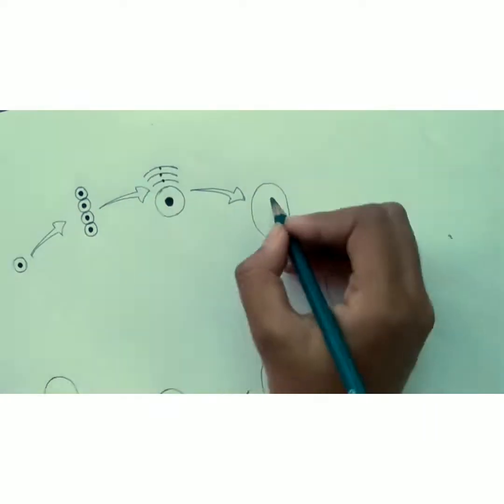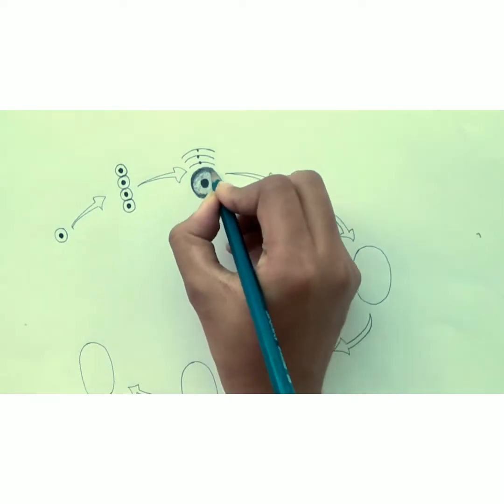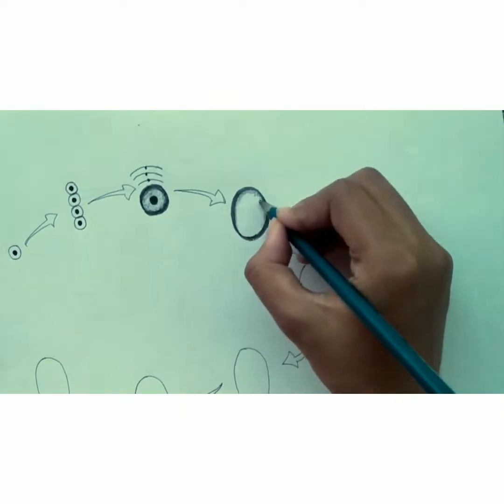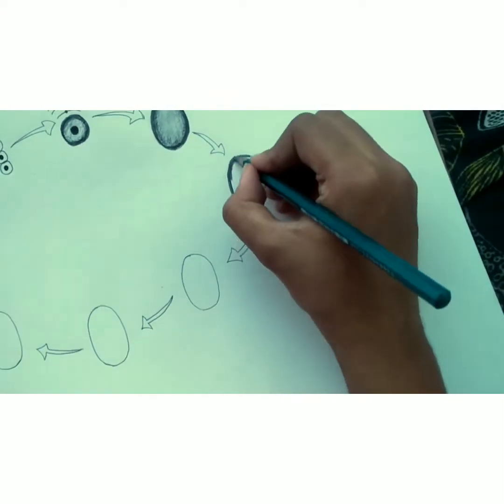Three nuclei towards the micropylar end constitute egg apparatus. Egg apparatus consists of large central haploid egg cell and two supporting haploid synergid cells.